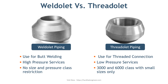The first difference is the use of these two components. When threaded branch connections are required from the pipe header, threadolet is used. When you need a butt weld connection to the pipe branch, weldolet is used. One is for threaded connection and another is for the butt welded connection.